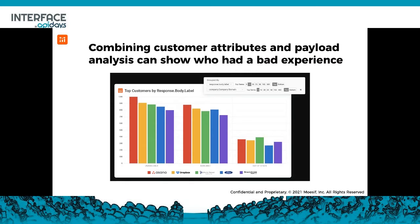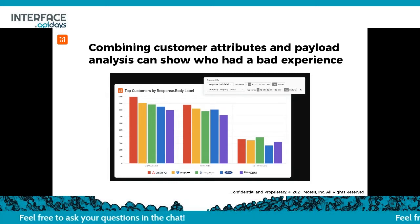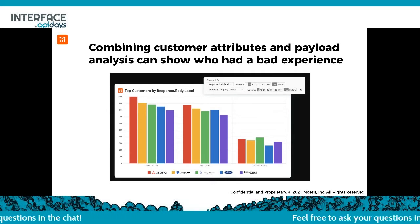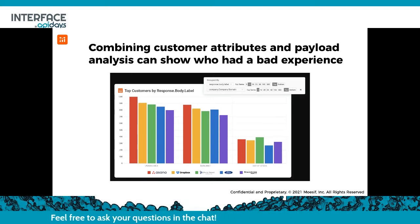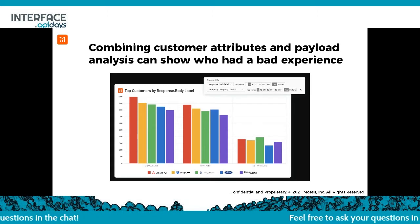If we tie this back to different customer attributes, we can have a full understanding of which customers are seeing 'unavailable' or 'out of stock' the most. This might help you prioritize customer outreach — identifying folks who might be struggling with your API versus folks who are seeing the most value and are ready for the next phase in their customer journey.